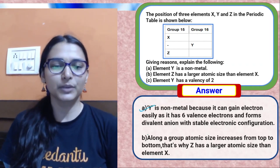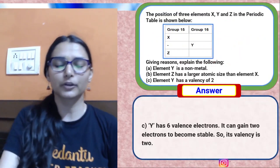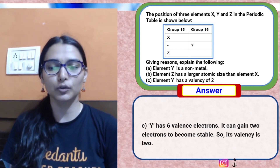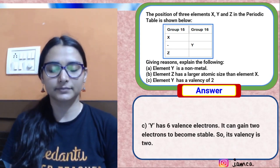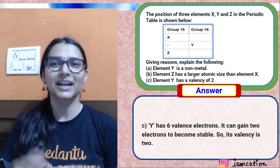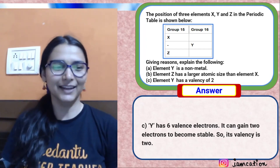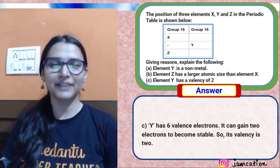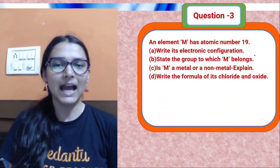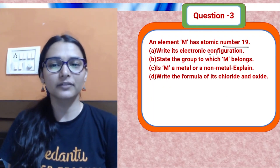Write only what is asked — do not beat about the bush. My Instagram handle is 'I am Kittayan.' Stay optimistic no matter what happens; positive vibes come back to you. Next question: element M has atomic number 19. Write its electronic configuration.